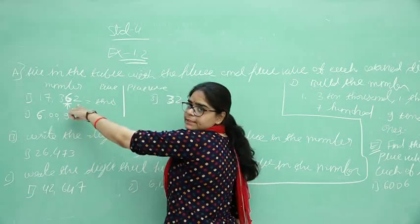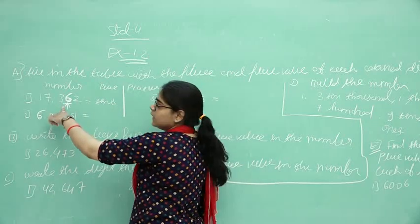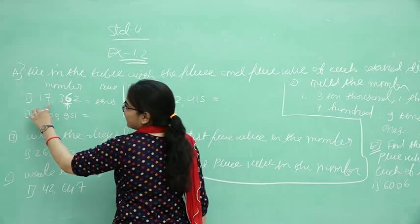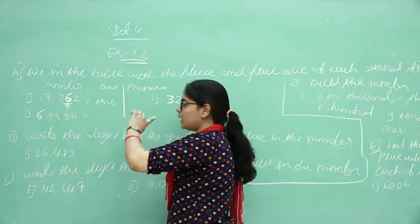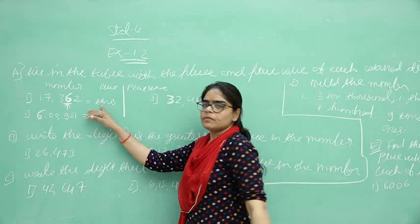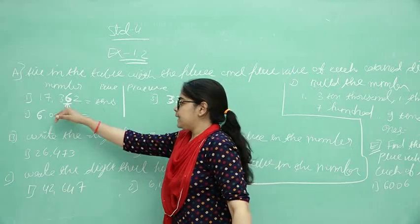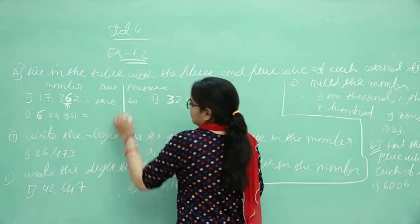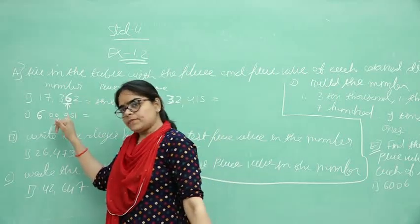Because here is ones, then after 10, then after 100, 1000, and 10,000. What is the place of 6? 10. And 6 times 10 means 60. So 60 is the place value of 6.